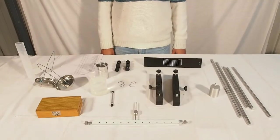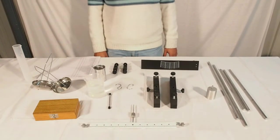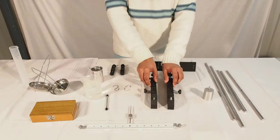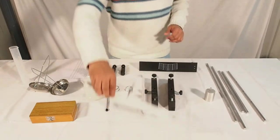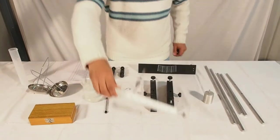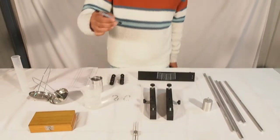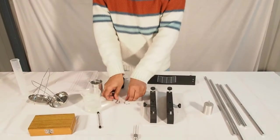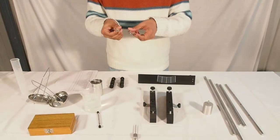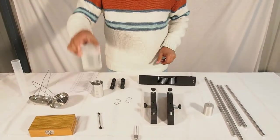We will first start with Archimedes's Principle. The items required to perform this experiment are two base supports, one beam balance with needle pointer, one beam hanging support, two S-shaped hooks, one beaker of 250 milliliters, and one double scale with boss head.